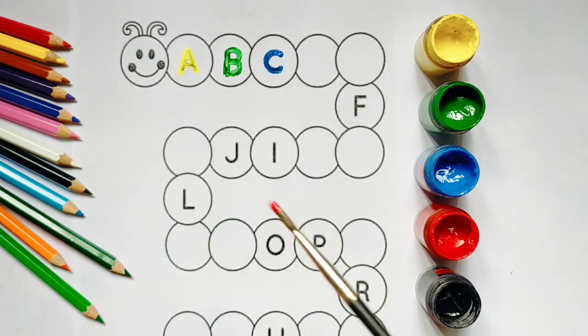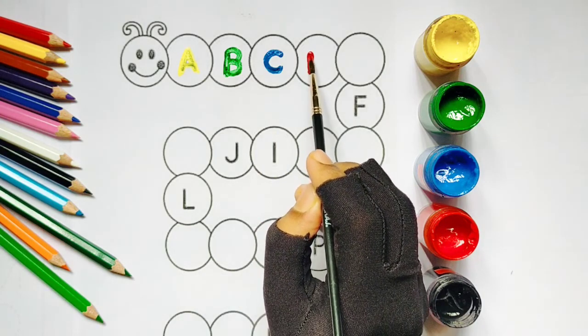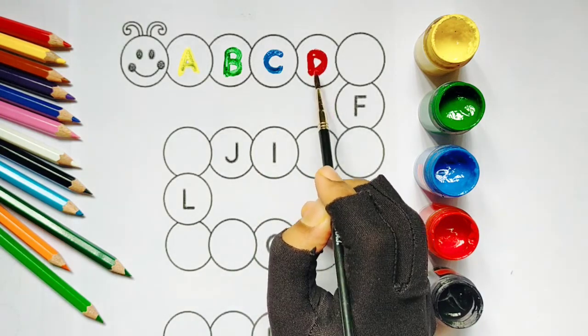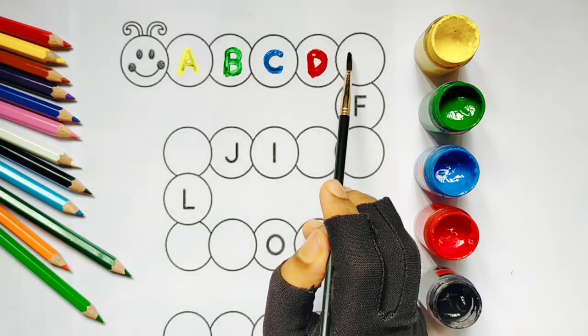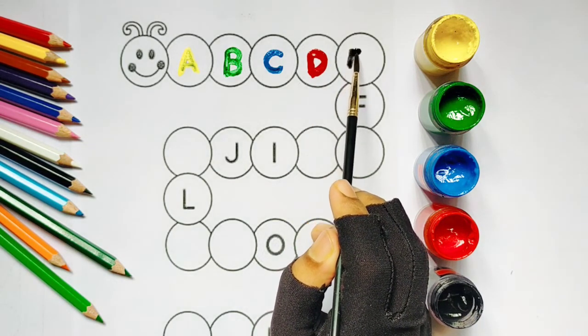Red color, D. D for dog. Black color, E. E for elephant.